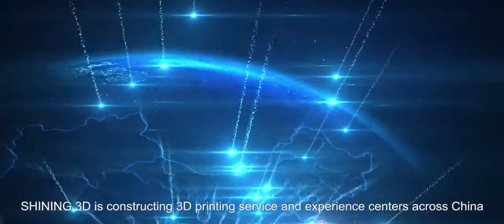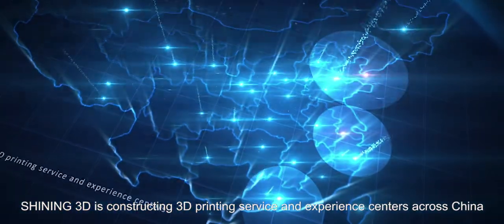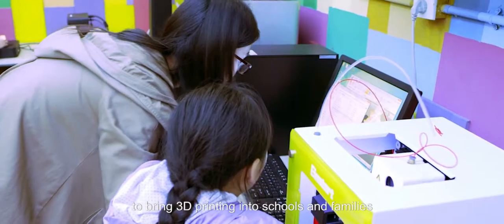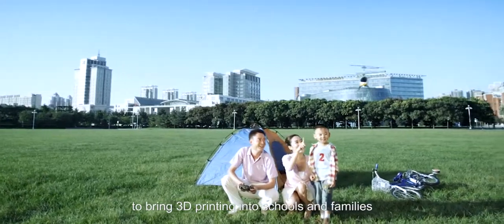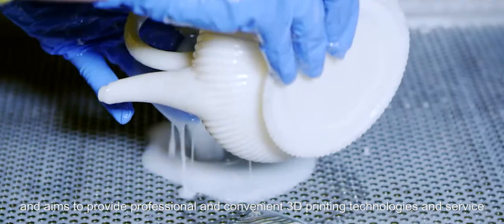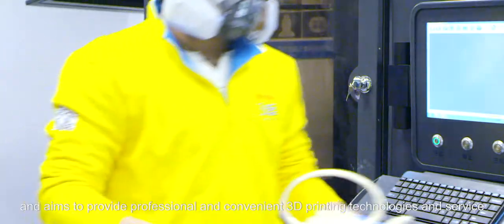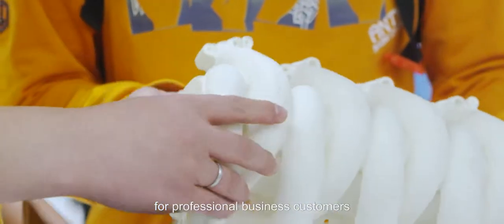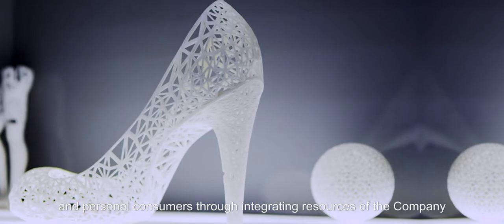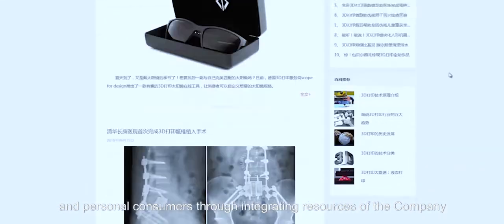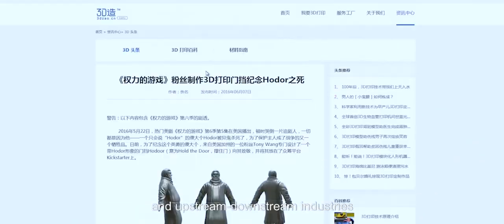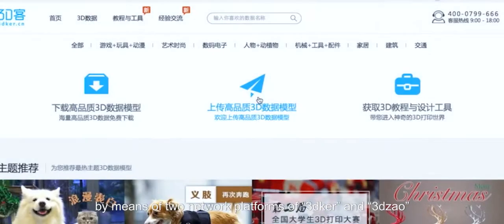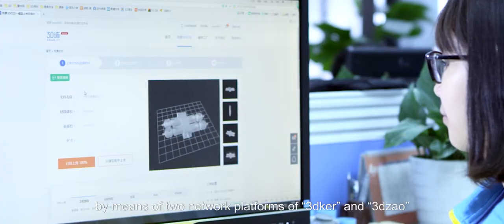Shining3D is constructing 3D printing service and experience centers across China to bring 3D printing into schools and families, and aims to provide professional and convenient 3D printing technologies and service for professional business customers and personal consumers, through integrating resources of the company and upstream downstream industries, by means of two network platforms of 3D Kerr and 3D Zao.